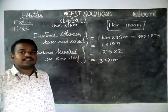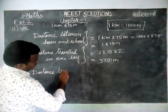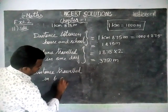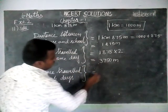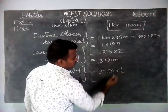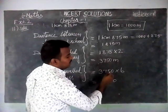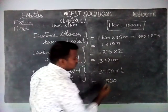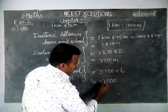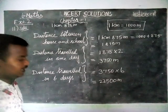Now they ask us to find the total distance covered in 6 days. So distance traveled in 6 days: 3750 into 6 is equal to — 6 zeros are 0; 6 fives are 30, remaining 3; 6 sevens are 42, 42 plus 3 is 45, remaining 4; 6 threes are 18, 18 plus 4 is 22. So 22500 m is the distance traveled in 6 days.